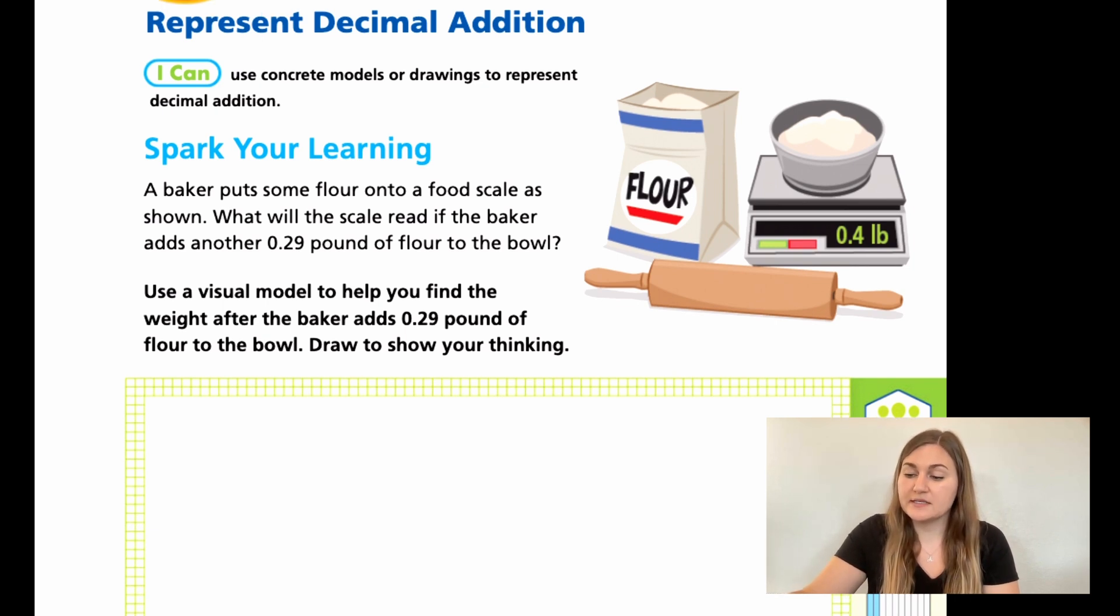We have a spark your learning. A baker put some flour onto a food scale as shown. What will the scale read if the baker adds another 0.29 pounds of flour to the bowl? Use a visual model to help you find the weight after the baker adds 0.29 pounds of flour to the bowl. Draw to show your work.